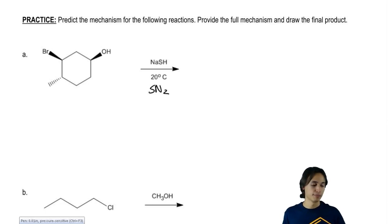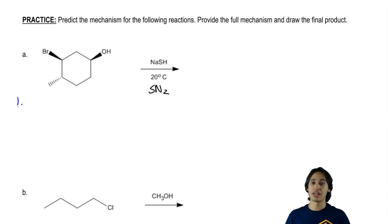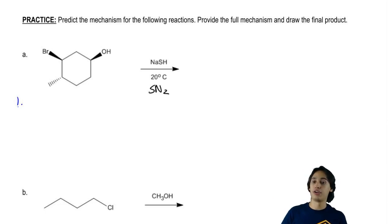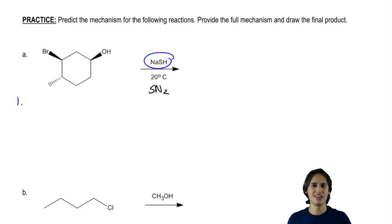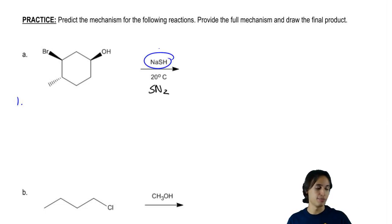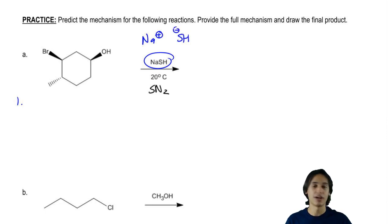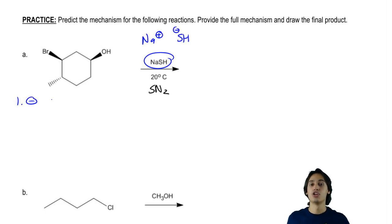Let me walk you guys through it. The first question we always ask on the flowchart: I know that I have a nucleophile, I know that I have a leaving group, so I know I should use that flowchart. And the first question is: is it negatively charged or is it neutral? Is NaSH negative or neutral? It should be negative, because sodium (Na) is going to dissociate into Na⁺ and SH⁻. So I do have a negatively charged nucleophile — it's SH⁻ — and I'm going to go down the left side of my flowchart.